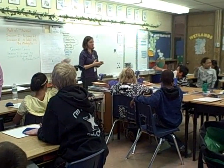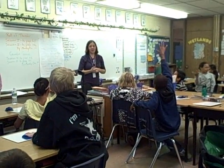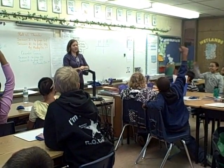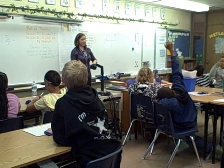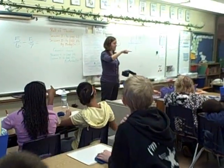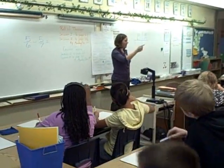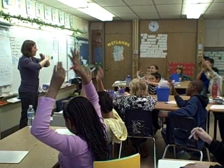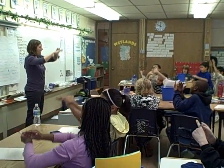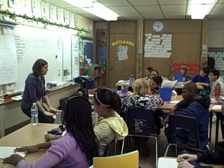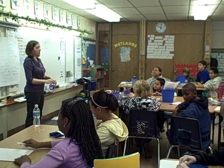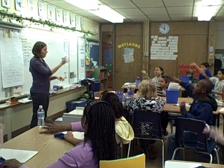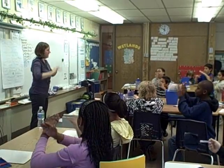Let's remember what we learned about division. The first thing we do is we skip the first number, we flip the second number, and we multiply and then reduce.